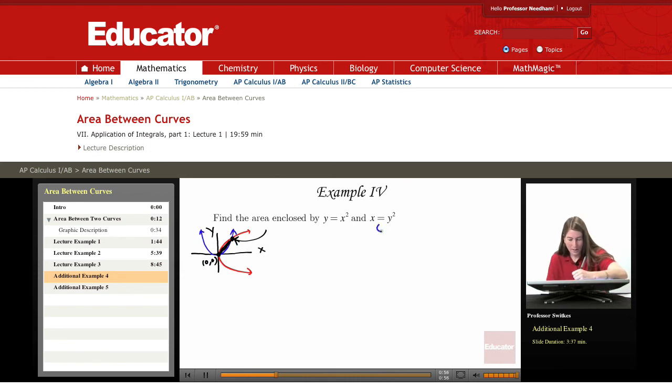Now x equals y squared could be rewritten as y equals plus or minus radical x, and the branch that we're looking at up here of this red curve is y equals positive radical x. So in finding the intersection points I want to have x squared match up with radical x. Now I need to solve for x so I'm going to square both sides. I'll get x to the fourth equals x. So x to the fourth minus x equals zero.